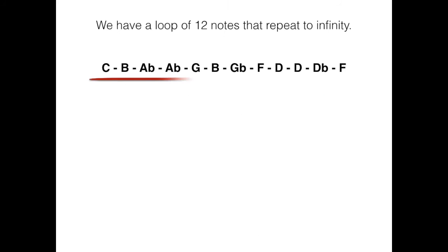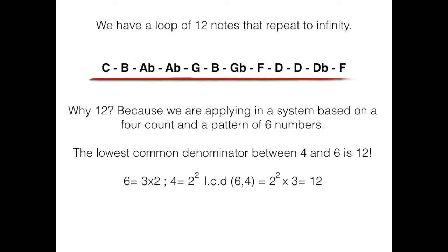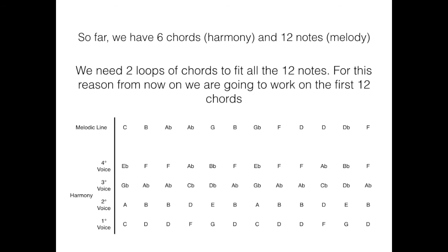We have a loop of 12 notes that repeat to infinity. Why 12? Because we are applying in a system based on a 4 count and a pattern of 6 numbers. The lowest common denominator between 4 and 6 is 12. So far we have 6 chords, our harmony, and 12 notes, our melody. We need 2 loops of chords to fill all the 12 notes. For this reason, from now on, we are going to work on the first 12 chords.